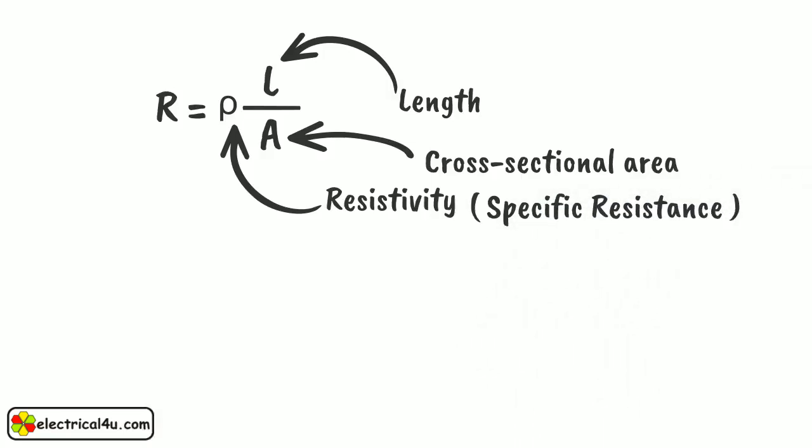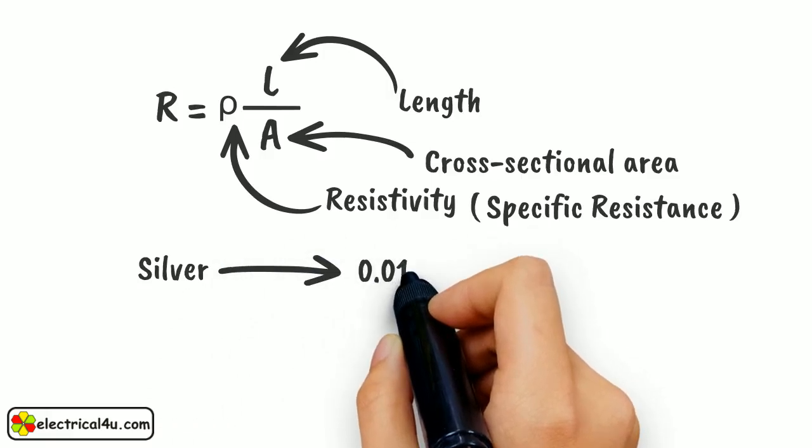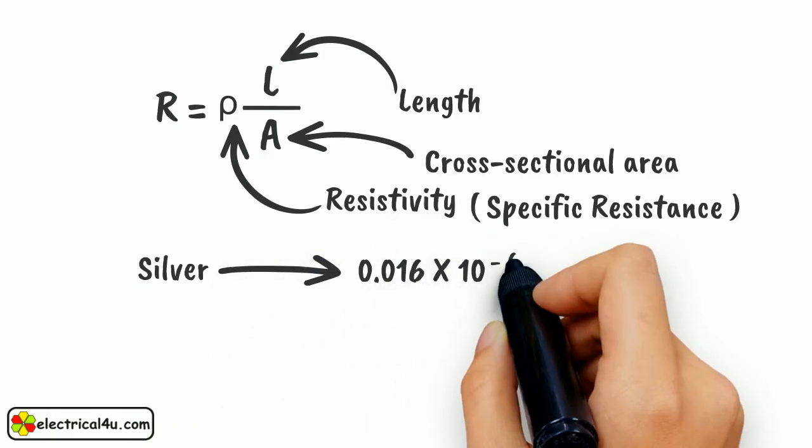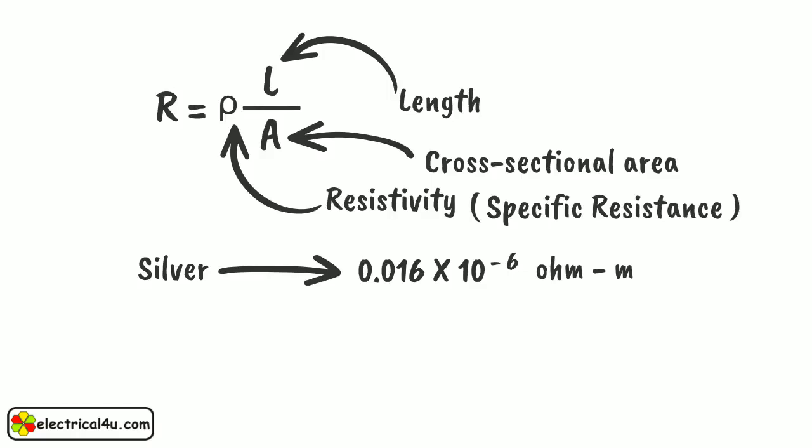The most conducting material, silver, has the lowest value of resistivity, that is, 0.016 into 10 to the power minus 6 ohm meter.